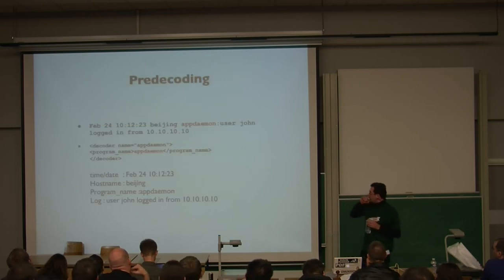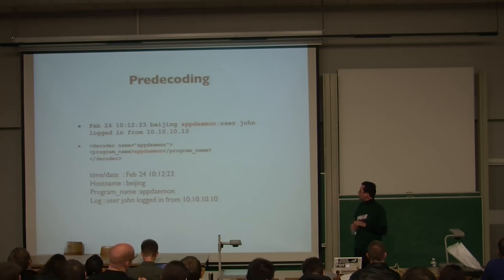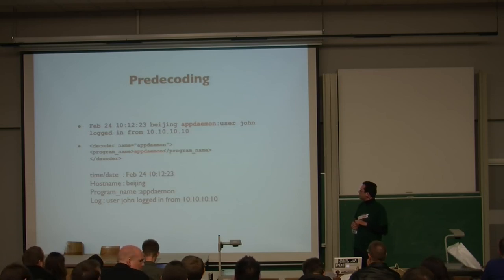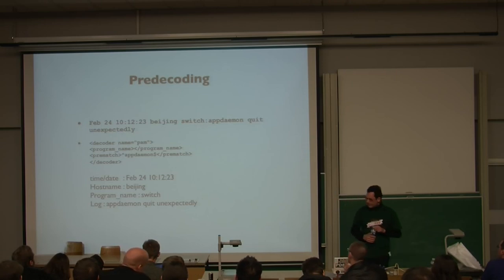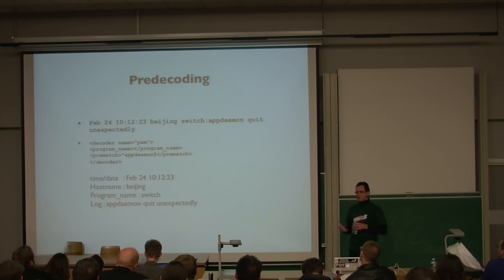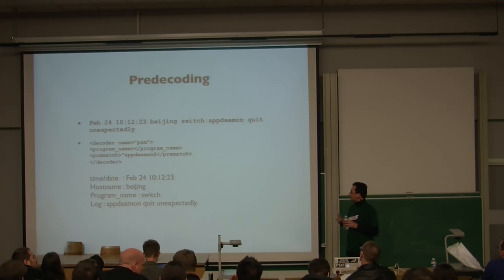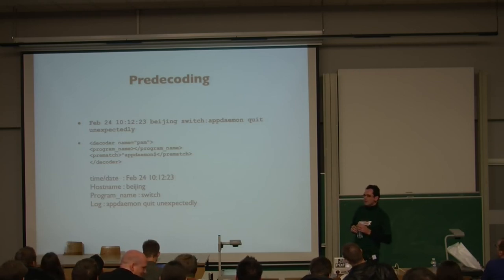So, this is an example of a pre-decoding rule. The only thing that we want is a default syslog message, so we can extract the time and date. The hostname is there as well. And then we extract the application name, the program name, and we just record the log message. Now, we might have a tool that is monitoring the same application, and then the application name is not going to match, but we want to have that log message for our application as well. So, we can use a basic regular expression to extract the application name and still have it in the same rule set.